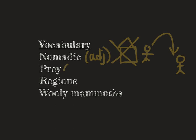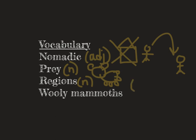Your next word is prey. Prey is a noun, and prey is an animal that's hunted for food. Many of the Native Americans would hunt animals for food. I'm going to draw a bear to help me remember that. The word regions is also a noun, and it refers to large spaces or geographic areas — geographic just means on a map. I'm going to draw the state of California, the state of Oregon, and the state of Washington to help me remember that regions are large spaces of land or geographic areas.